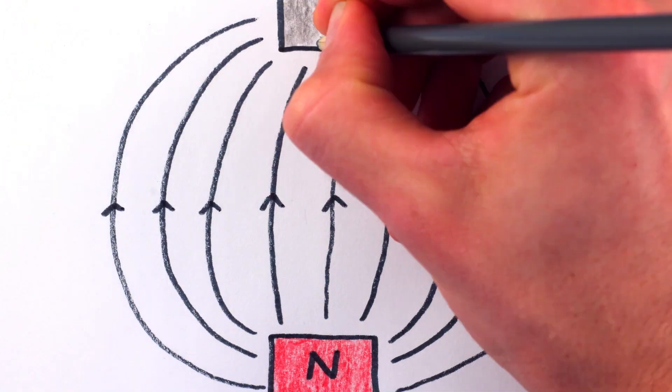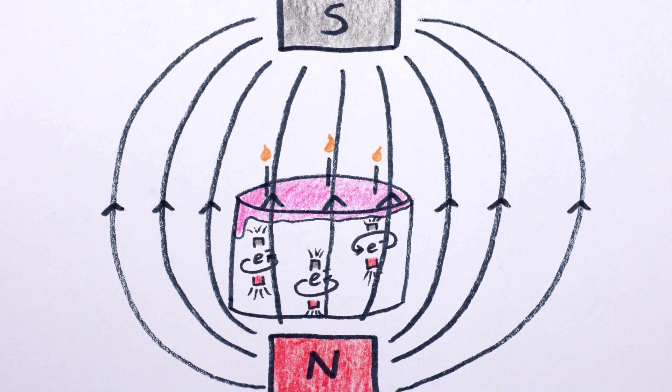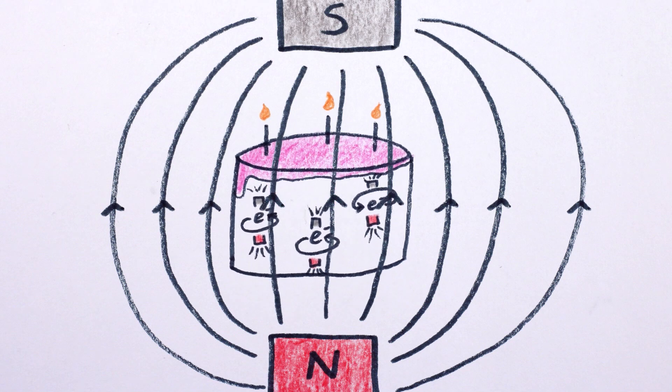Basically, an external magnetic field causes the electrons around atoms in a material to change course, and their new motion generates an opposing magnetic field. This field is pretty weak, but it does cause the material to be repulsed from the magnet a little bit.